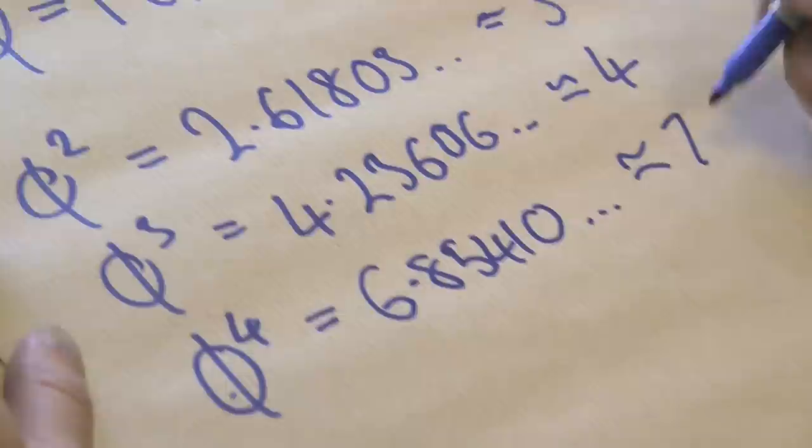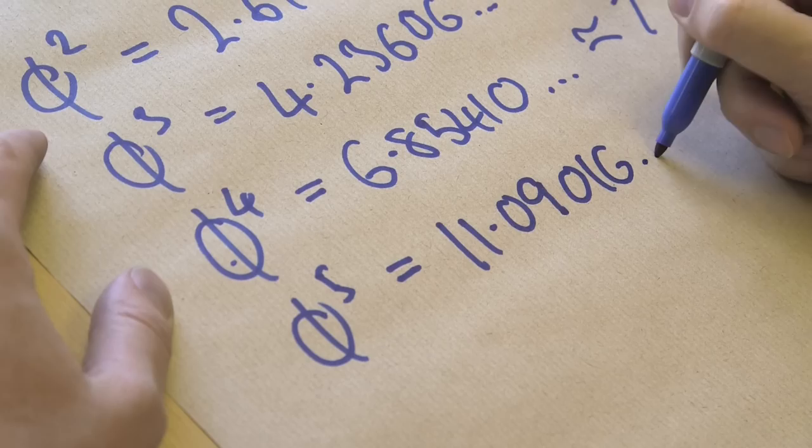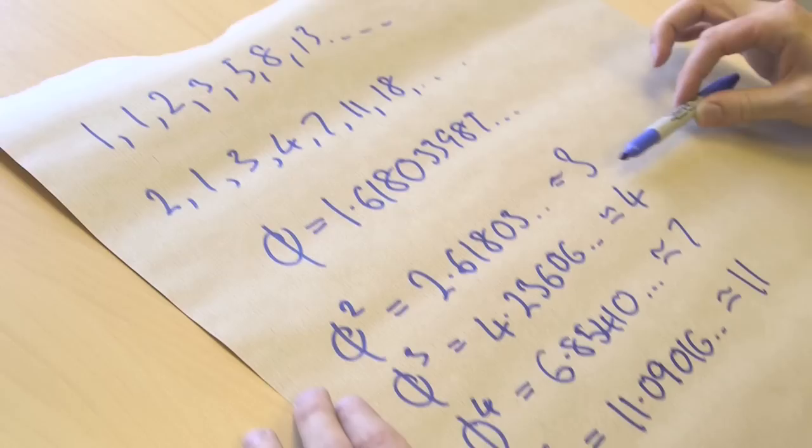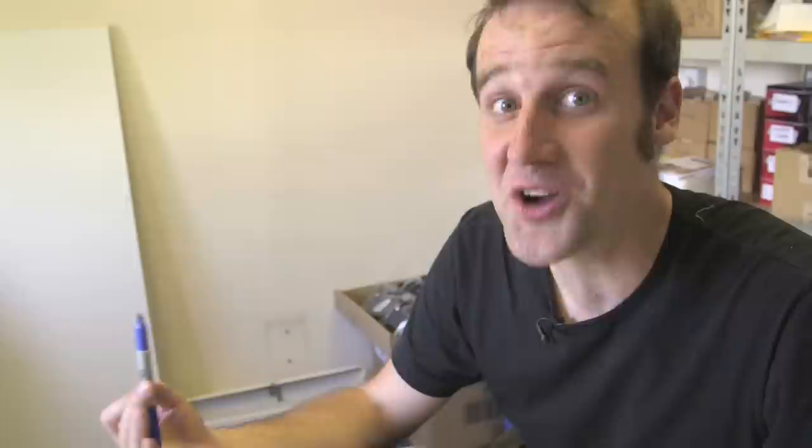Phi to the 5. And if I carry on and take each of these and round them to the nearest whole number, what do I get? Sure enough, these are the Lucas numbers appearing up here, and that will carry on all the way down. Every power of the golden ratio rounded to the nearest whole number gives you the Lucas numbers.